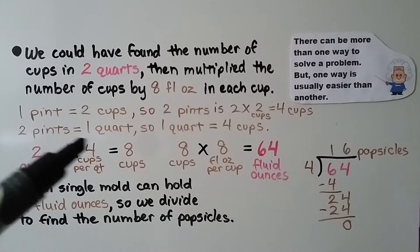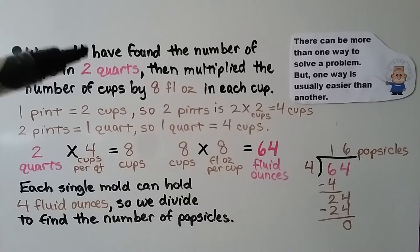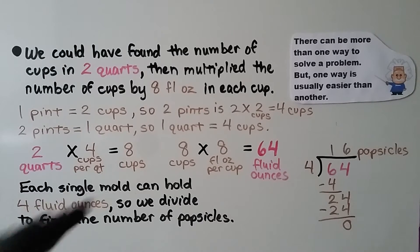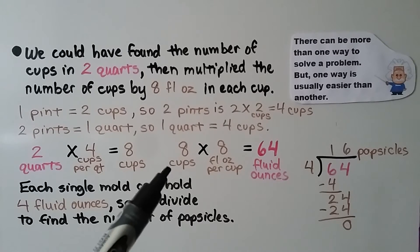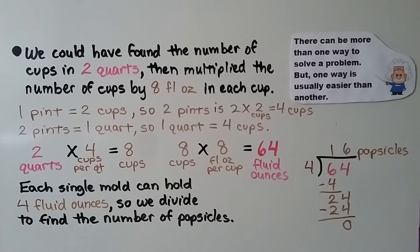And two pints is equal to one quart. So one quart is equal to four cups. She had two quarts. So we had two quarts times four cups per quart. That's eight cups. Now we can multiply the eight cups times eight fluid ounces per cup and we get 64 fluid ounces, just like we did when we did it the other way.